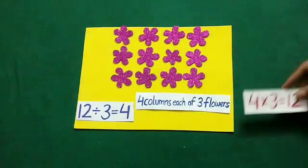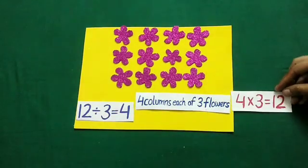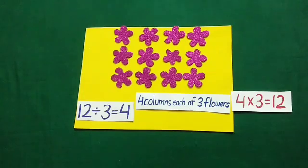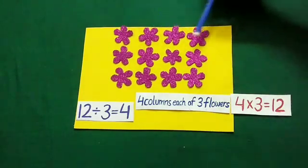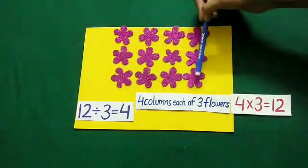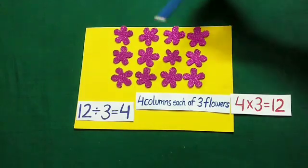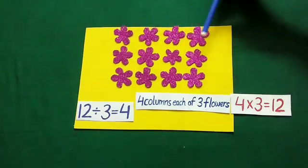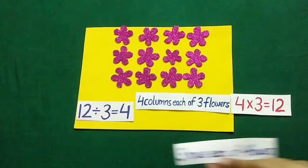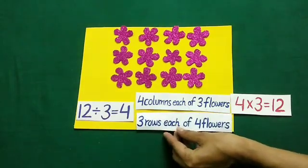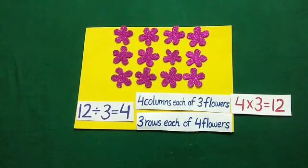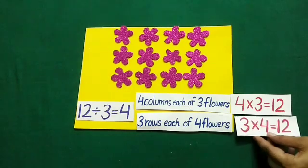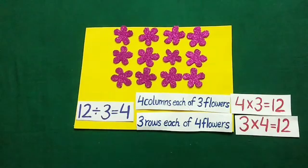From left to right we have 3 rows and in each row we have 1, 2, 3, 4 flowers. Means 3 rows each of 4 flowers. It is equal to 3 multiplied by 4 is equal to 12.